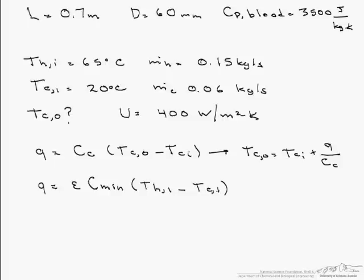The first thing we're going to do is calculate our heat capacity rates for both the hot and the cold fluid and figure out which one of them is the minimum. Let's start with our cold one, which is our mass flow rate times the heat capacity of the blood, which is 210 joules per second K.